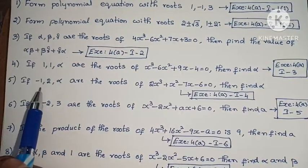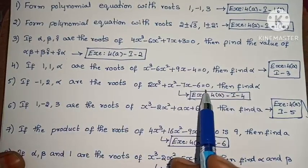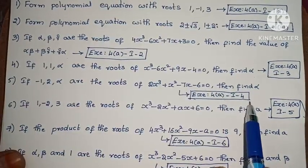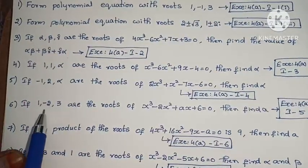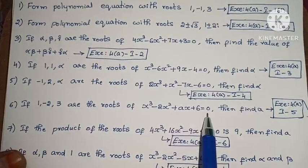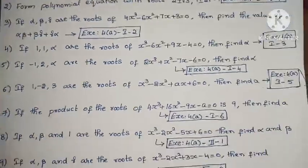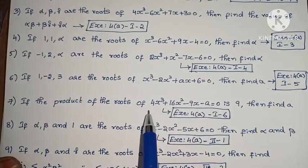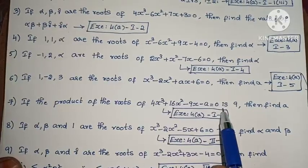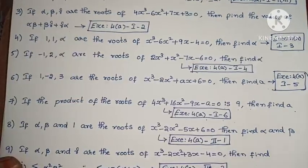Next, if minus 1, 2, alpha are the roots of 2x³ plus x² minus 7x minus 6 equals 0, then find alpha. Exercise 4A, first Roman numeral, fourth one. Next, if 1, minus 2, 3 are the roots of x³ minus 2x² plus ax plus 6 equals 0, then find A. Exercise 4A, first Roman numeral, fifth one. Next, if the product of roots of 4x³ plus 16x² minus 9x minus a equals 0 is 9, find A. Exercise 4A, first Roman numeral, sixth one.